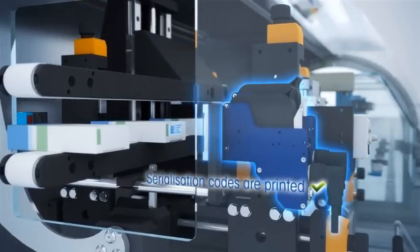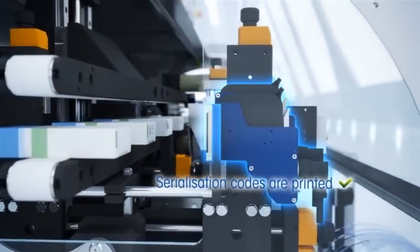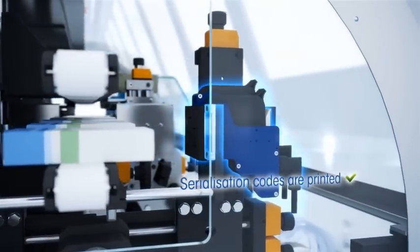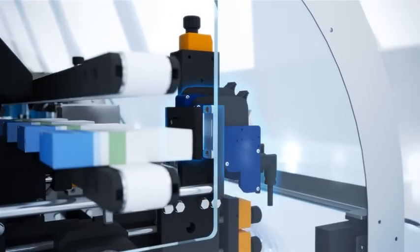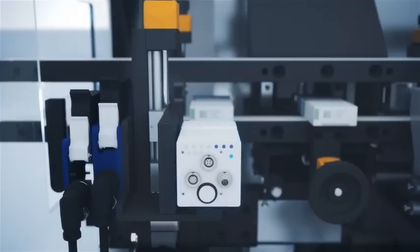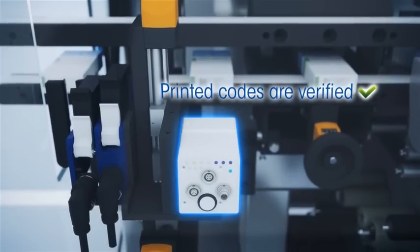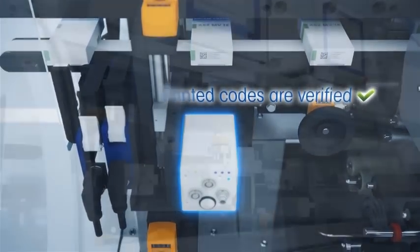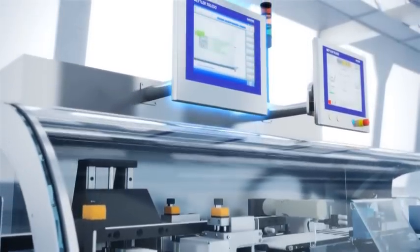Unique serialization codes are printed in highest quality on the collapsible boxes. The vision inspection system verifies the printed data for correctness and saves the information in an internal database.